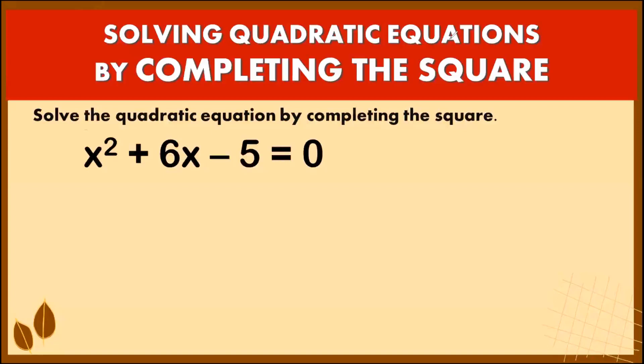In factoring, we look at the last term and take its factors. For x² + 6x - 5 = 0, we have negative 5. The factors are 1 and 5, so it might be negative 5 and 1, or negative 1 and 5. These are unlikely to give us positive 6, so in this case we cannot apply factoring. Instead, we will be applying completing the square in order to find the values of our solutions.